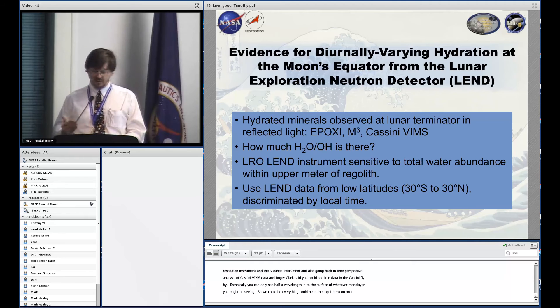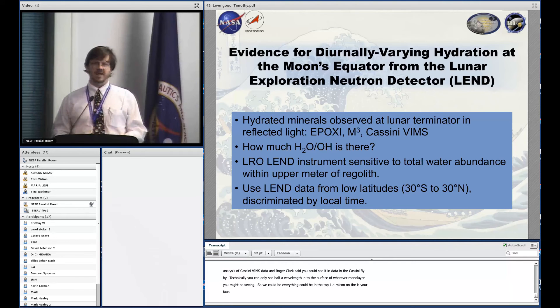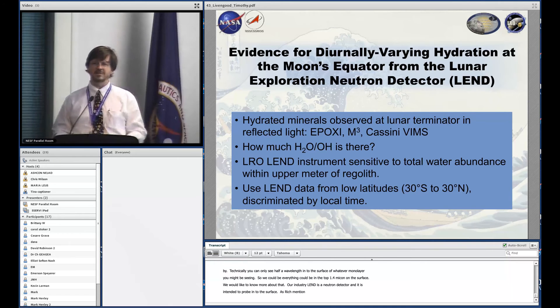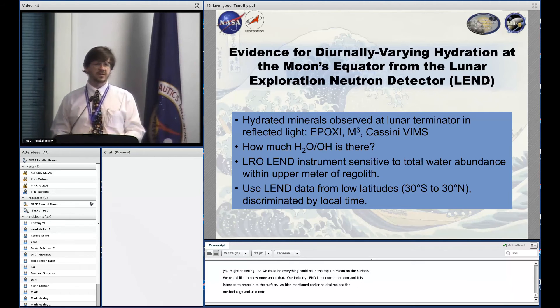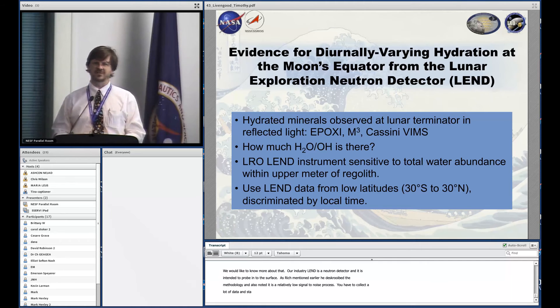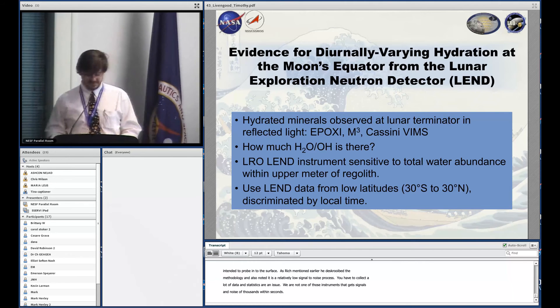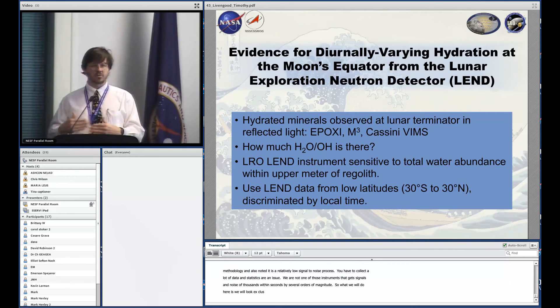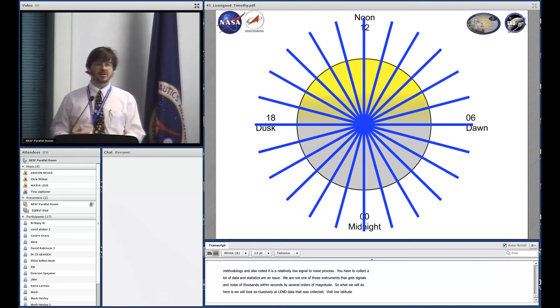Our instrument LEND is a neutron detector intended to probe into the surface. As Rich mentioned earlier, he described the methodology. It is a relatively low signal-to-noise process. You have to collect a lot of data and statistics are an issue. We'll look exclusively at LEND data collected at low latitude. We're in a polar orbit so we visit low latitudes every orbit, discriminated by the local time of the observation.